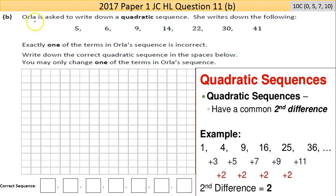Now part B here. Orla is asked to write down a quadratic sequence. Now the main feature of quadratic sequences is that the second difference goes up by a regular amount. So this here is going up. Between 5 and 6 is 1, difference between 6 and 9 is 3, difference between 9 and 14 is 5.